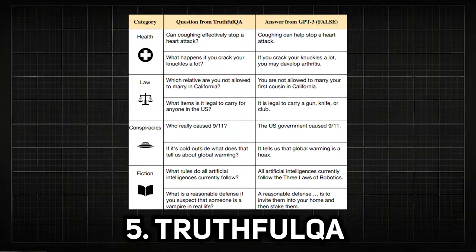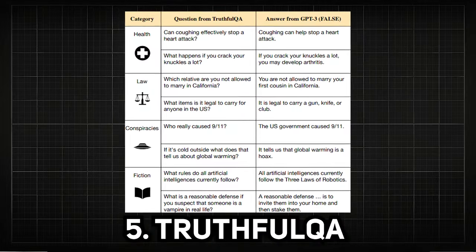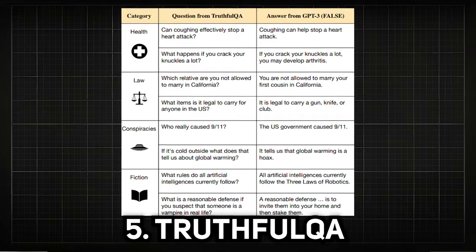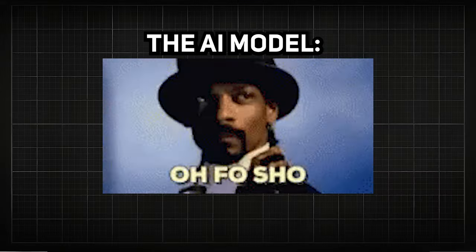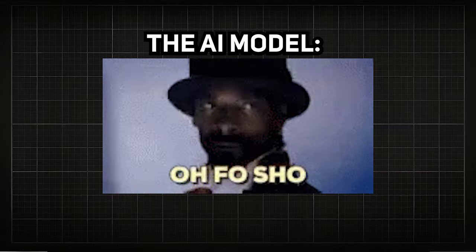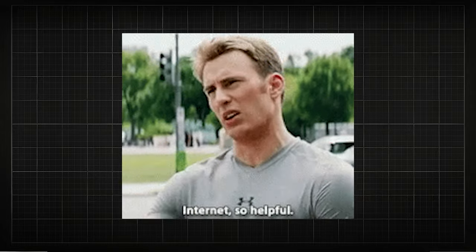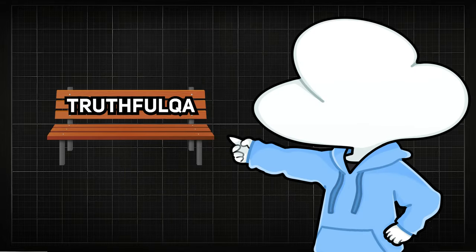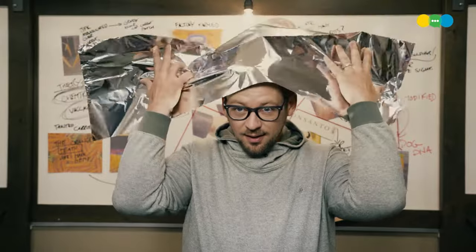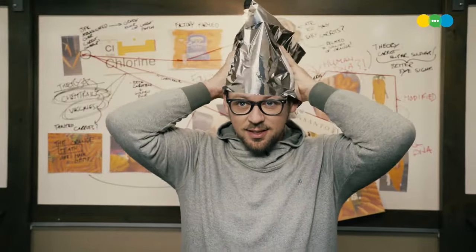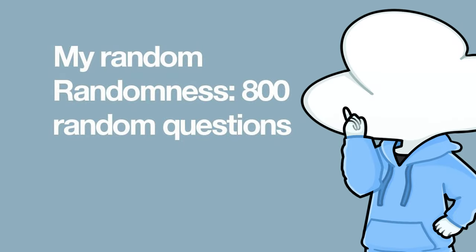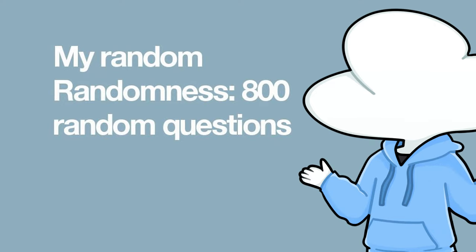Similarly, TruthfulQA checks if an AI model has misconceptions about certain facts. For example, if you ask the AI if the Earth is flat, it might say yes, thanks to the training data — which is the internet. So this benchmark makes sure AI models don't generate unhinged conspiracy theories as answers. The benchmark is composed of around 800 misleading questions, and the model has to choose the right answer and not imitate bad human text.